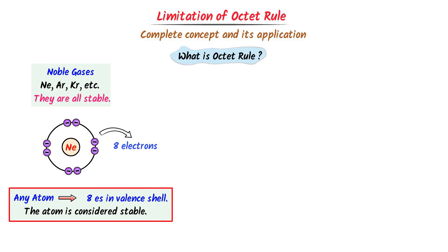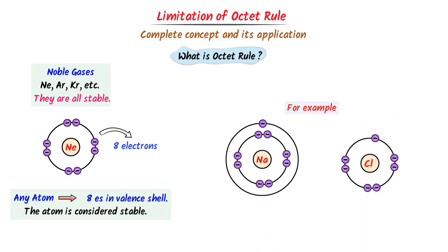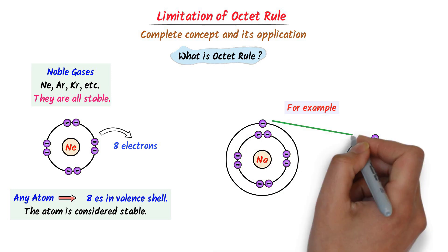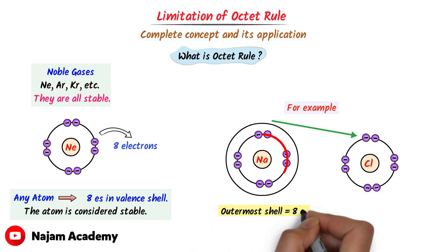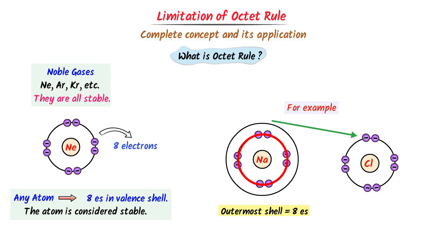For example, consider sodium and chlorine. Sodium has one electron in its outermost shell and eight electrons in the second shell, while chlorine has seven electrons in its outermost shell. Sodium will lose this one electron and chlorine will gain this one electron. As a result, an ionic bond is formed and we get sodium chloride. In the outermost shell of sodium there are now eight electrons, so sodium is stable, and in the outermost shell of chlorine there are also eight electrons, so chlorine is also stable.